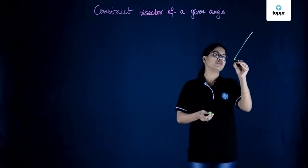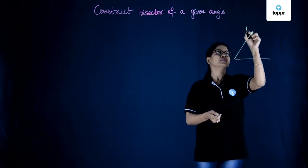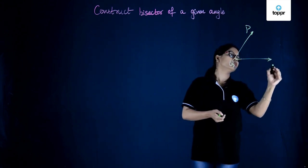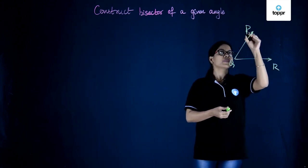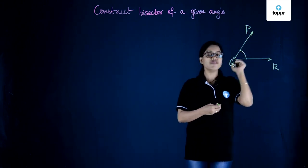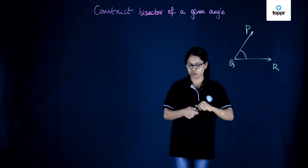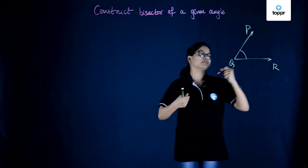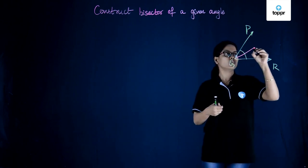For example, if we have a given angle, so this is angle PQR and if we are talking about bisecting angle Q, so we are required to construct